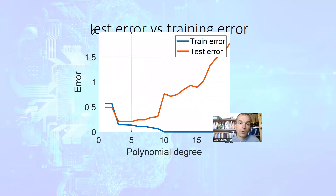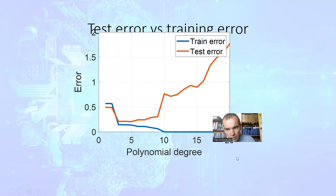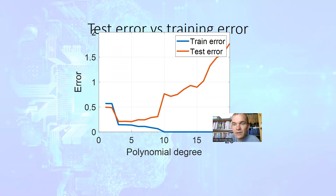If we plot the test error depending on the polynomial degree, we see that with the growth of polynomial degree, the training error quickly goes to zero and vanishes. But the testing error, while at the very beginning it is also becoming lower, then starts growing. This is the so-called effect of high variance.